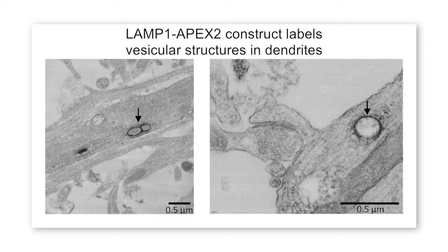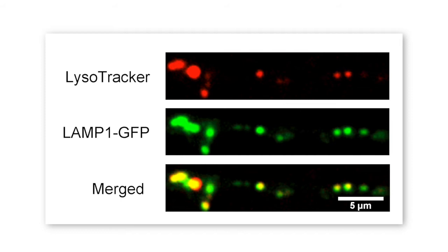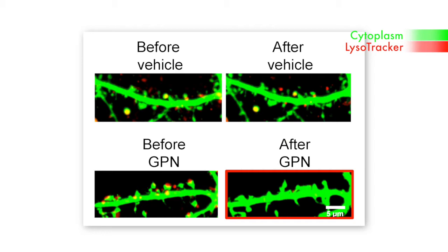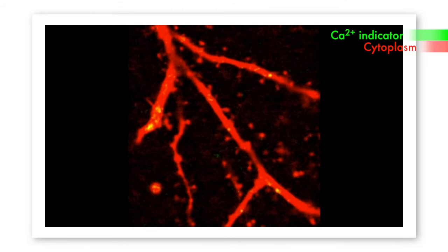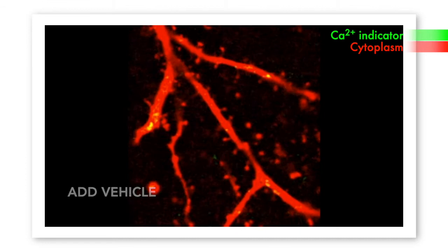These LAMP1-positive structures appear to have lysosomal activity. They are acidic, and they disappear upon treatment with GPN, a substrate of the lysosomal protease cathepsin C, that when cleaved causes the organelle to lyse and release calcium. This gave the researchers confidence that these structures had the functional capacity of what would be termed a lysosome.